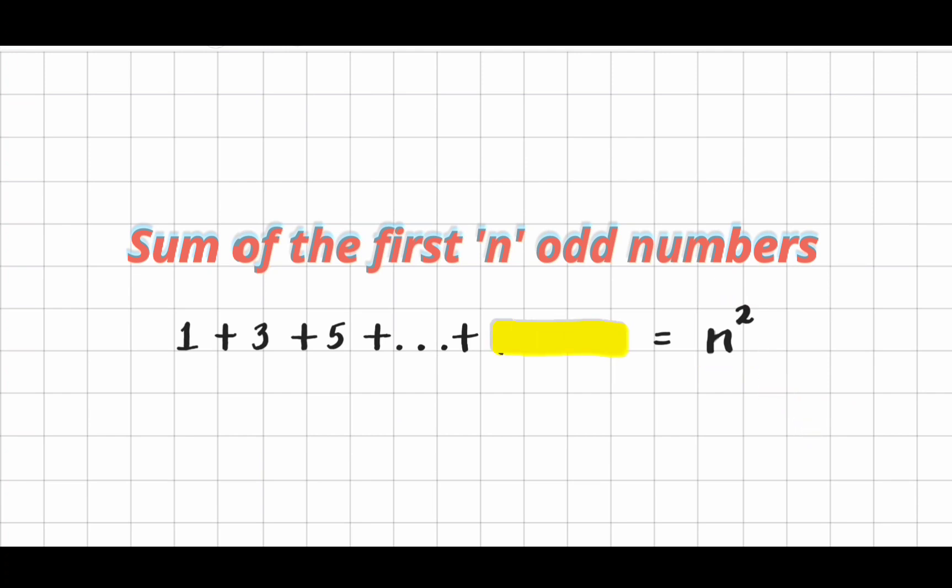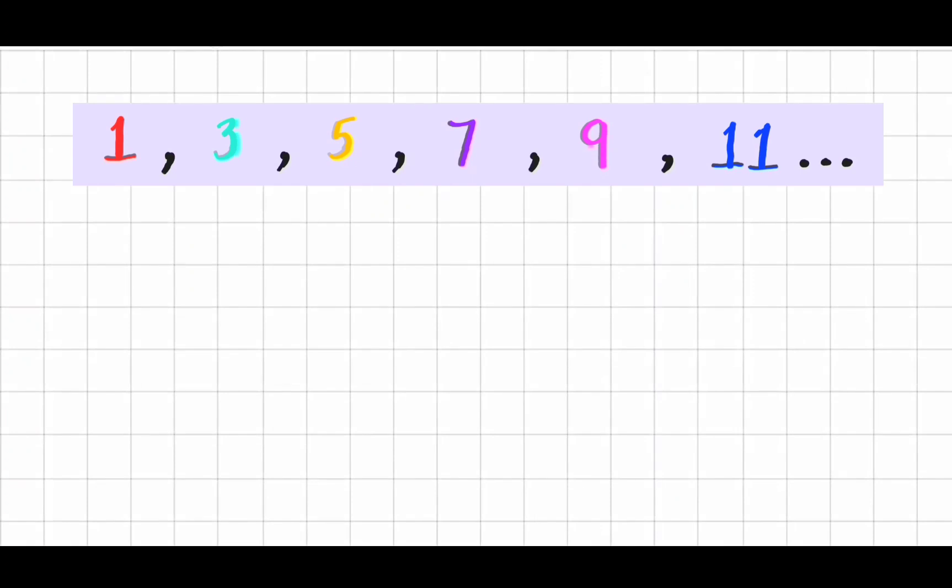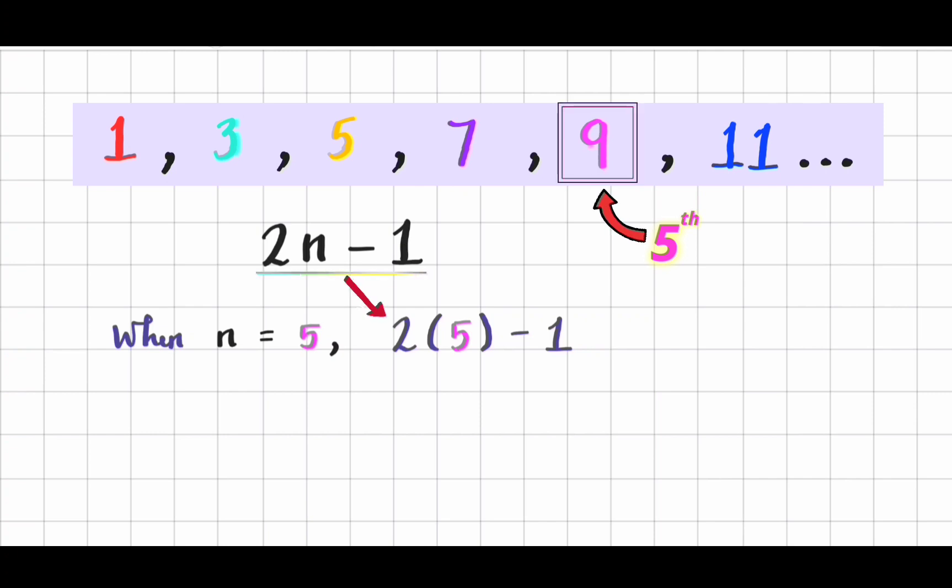Here why 2n minus 1? Since 2n minus 1 is a general form of odd number, let's see why with an example. We all know that the 5th positive odd number is 9. This 2n minus 1 should be correct when we give 5 in place of n, we get 9. Let's check that now. If we give 5 in place of n, we have 2 times 5 minus 1, which equals 10 minus 1. That is 9.